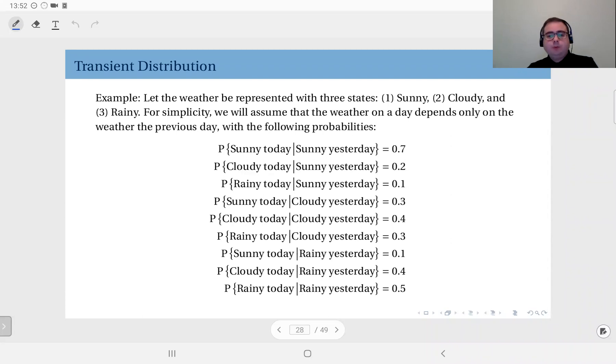This is the simple weather model, and we will represent the weather with three states: sunny, cloudy, and rainy. We will assume this takes one value within one day, so this will be a discrete time process. For simplicity, we will assume the weather on a day depends only on the previous day. That is essentially the Markov property.